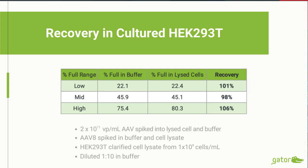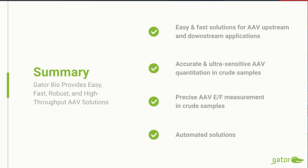In summary, we have demonstrated fast and easy practical solutions for upstream and downstream quantitation applications. Both the ultra-sensitive AAV assay and the empty versus full method have the potential to be used with crude cell lysates. All of these assays can be performed in an automated manner. Overall, this allows the GatorBio system to provide easy, fast, robust, and high-throughput AAV solutions.